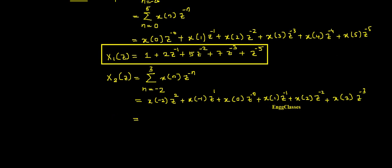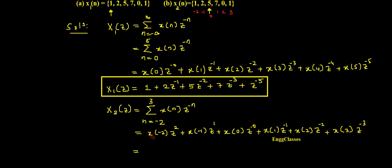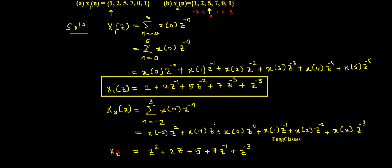Substituting the values: x(−2) is 1, giving z squared. x(−1) is 2, giving 2z. x(0) is 5, giving 5. x(1) is 7, giving 7z to the power minus 1. x(2) is 0, so that term vanishes. x(3) is 1, giving z to the power minus 3. So X2(z) equals z² plus 2z plus 5 plus 7z⁻¹ plus z⁻³.